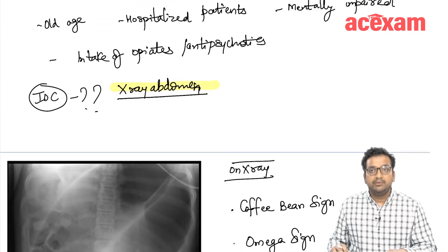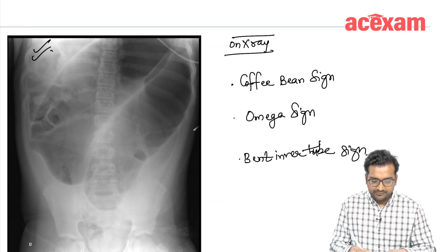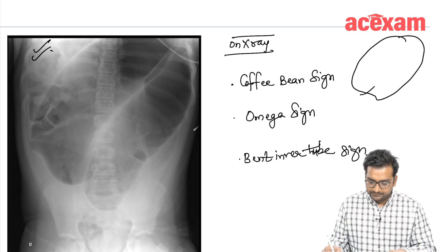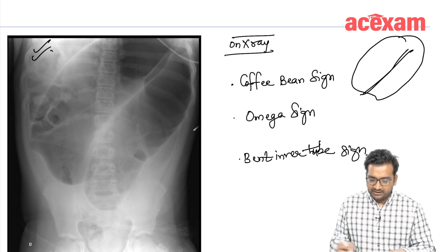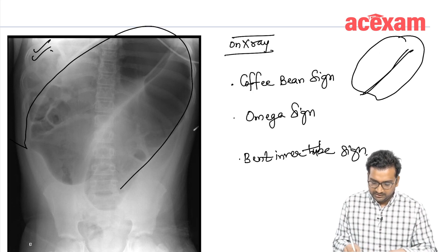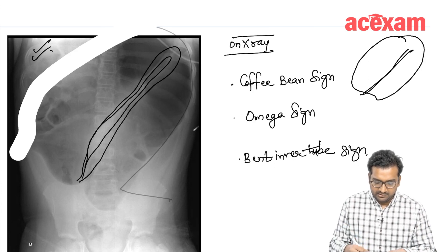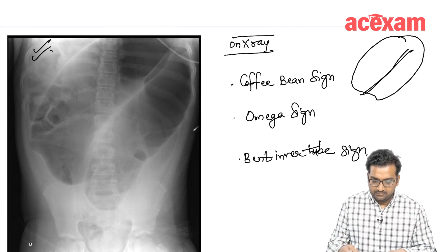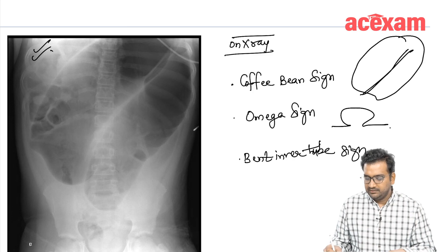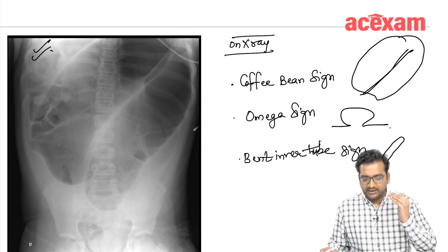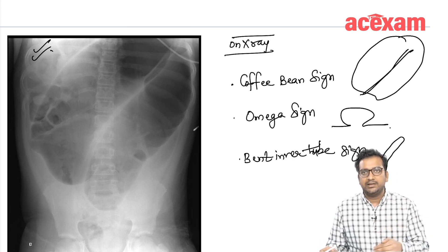On x-ray, there are various signs seen in sigmoid volvulus. These include the coffee bean sign, the omega sign, and the bent inner tube sign. All three of these signs are very important from an MCQ point of view.